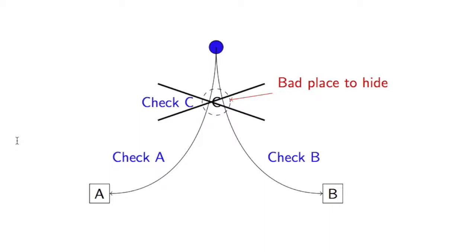Whereas hiding in A is the best strategy when Ben chooses to check B and vice versa. Hiding in C is never better than anything else. So C is a dominated strategy.